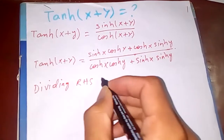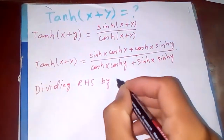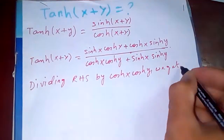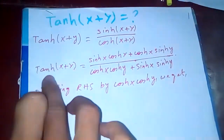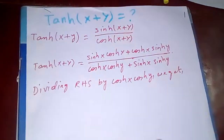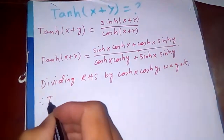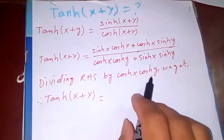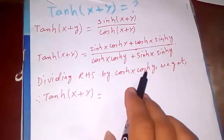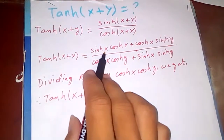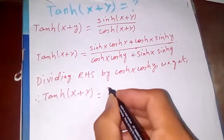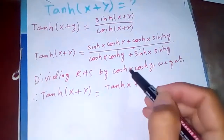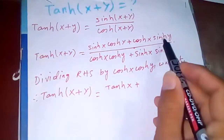Now, dividing both the numerator and denominator on the right-hand side by cosh(x)·cosh(y). We divide by cosine and not by sine because this is tanh, so we want to get the result in terms of tanh. Therefore, dividing cosh(y) by cosh(y) cancels out, and we are left with sinh(x)/cosh(x), which is tanh(x).